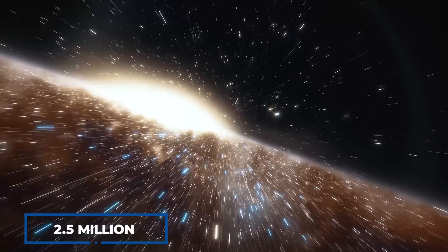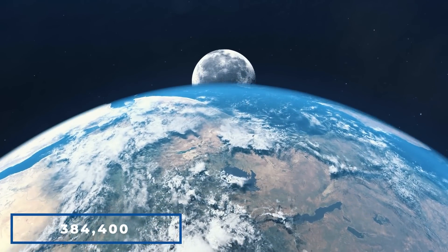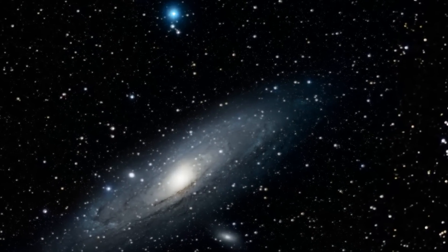The galaxy is 2.5 million light years from Earth, but the moon is just 384,400 kilometers, 238,900 miles away. This should give you a better idea of how large the galaxy is.